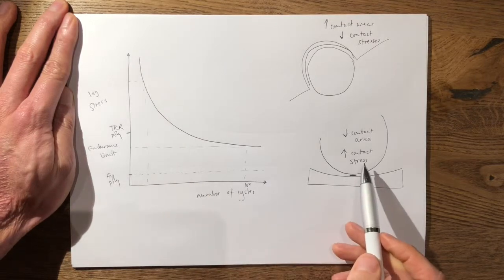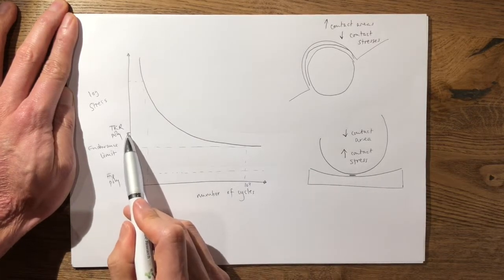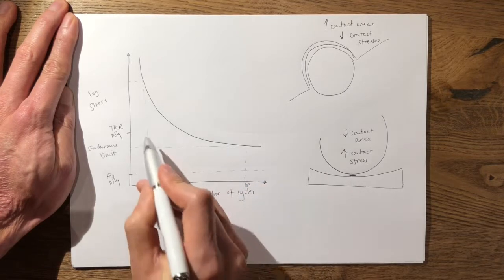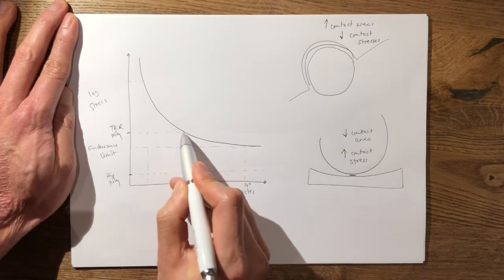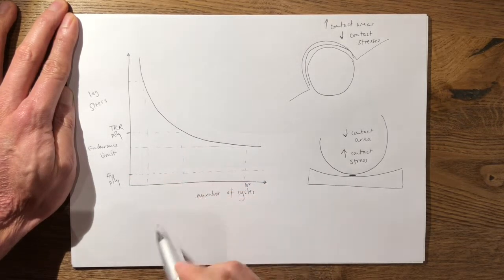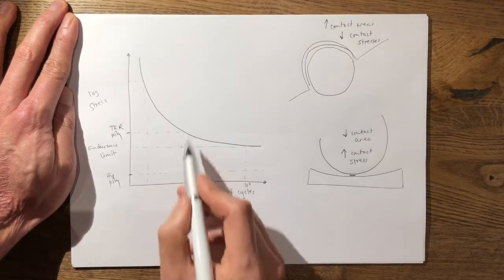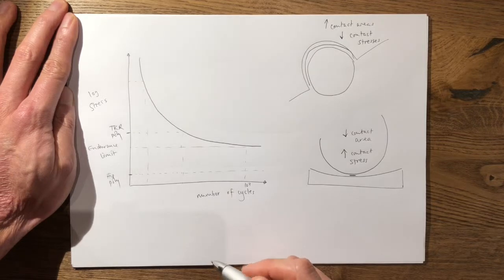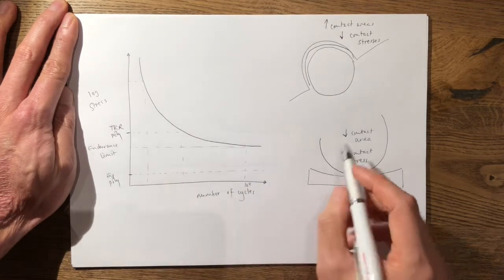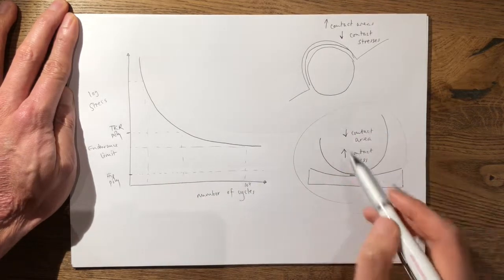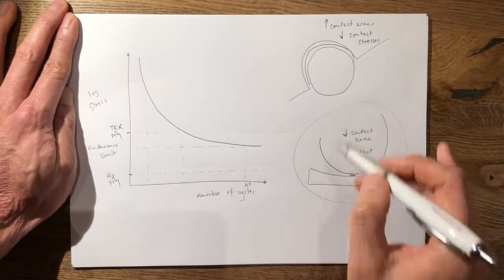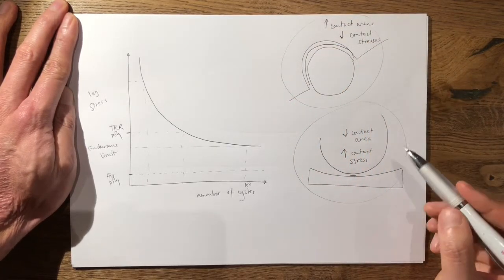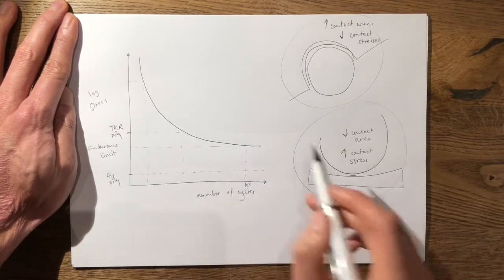So if it's operating above or at the level of the endurance limit, it will only last a finite amount of time or a finite number of cycles before it undergoes catastrophic failure. So it's important to know that in a total knee replacement it's a different environment compared to a total hip replacement.